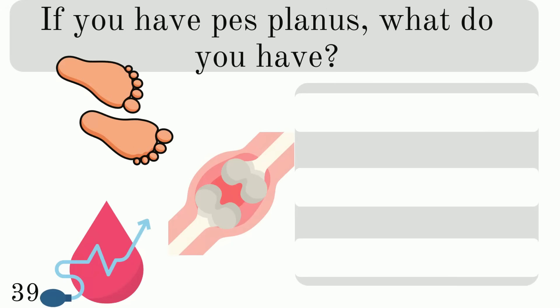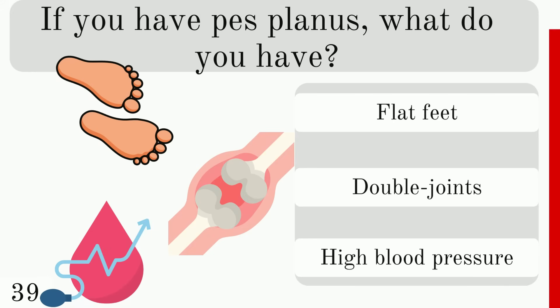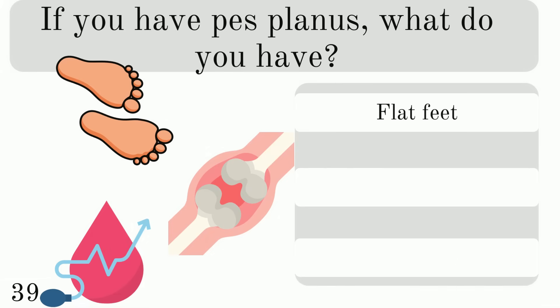If you have pes planus, what do you have: flat feet, double joints, or high blood pressure? The answer is flat feet.